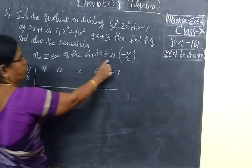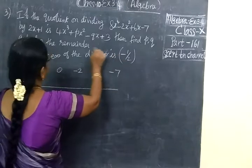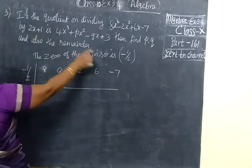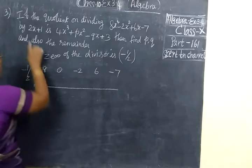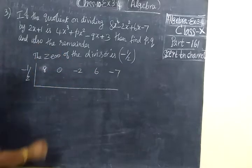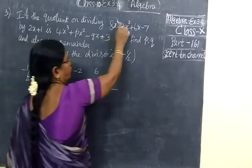The zero of the divisor will be minus 1 by 2. Then 2x plus 1 and a, plus or minus the 2 will come to the denominator. It is not in the standard form.